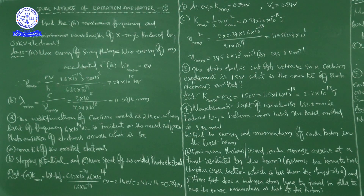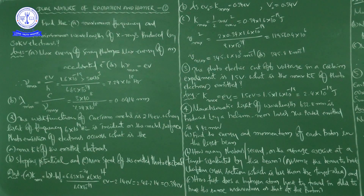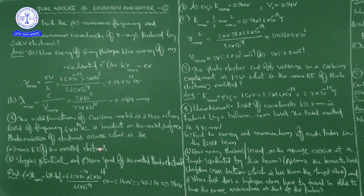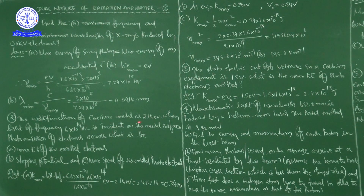The three quantities to calculate are: (A) maximum kinetic energy of the emitted electrons, (B) stopping potential, and (C) maximum speed of the emitted photoelectrons. Keep in mind the situation and given values: work function is 2.14 eV and incident light frequency is 6×10¹⁴ Hz.